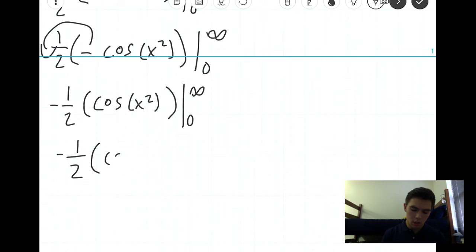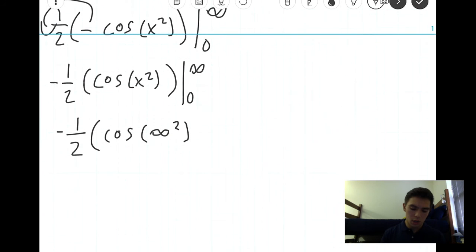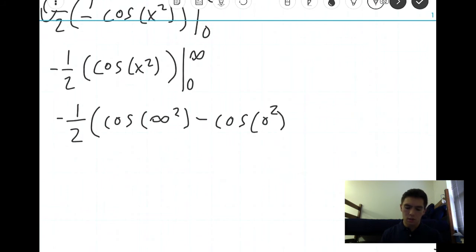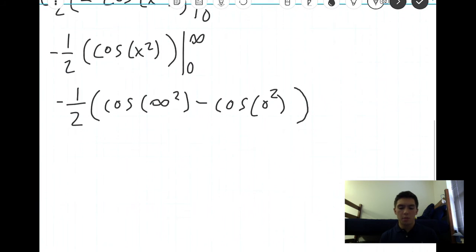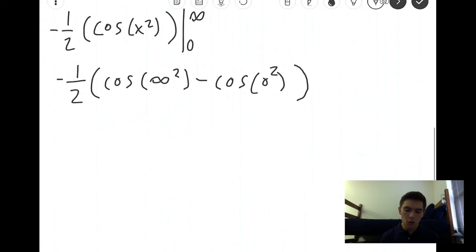So we have cosine of infinity squared, which is kind of weird, minus cosine of zero squared. And often this is what happens with improper integrals. You're dealing with infinity, and it's kind of an unusual situation.